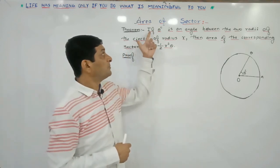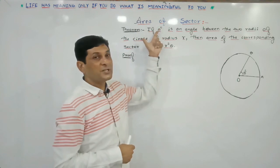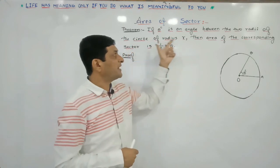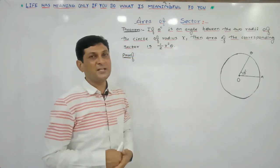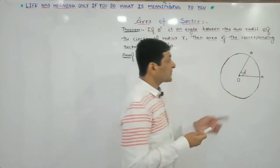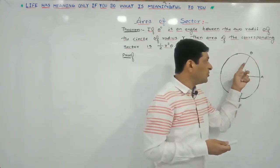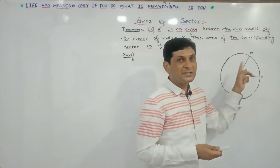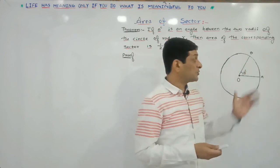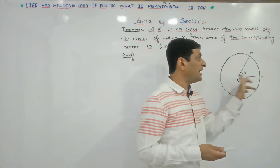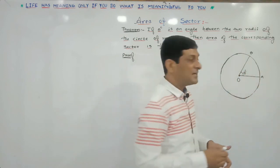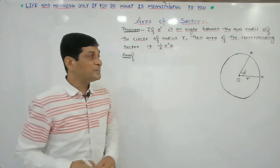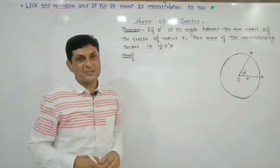We are now going to prove a new formula applicable when the angle of the sector is measured in radians. The statement of the theorem: if theta radian is the angle between two radii of a circle of radius R, then the area of the corresponding sector is one-half R squared theta. So for sector AOB with angle theta radian and radius R, we have to prove that the area equals half R squared theta.